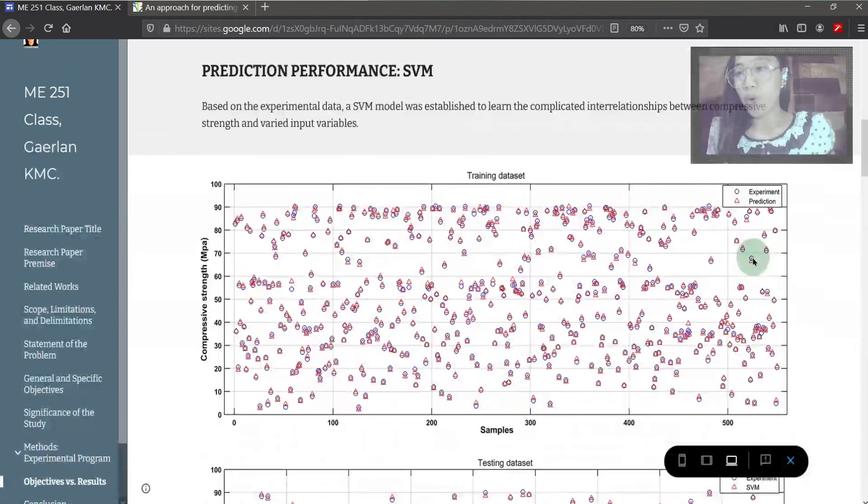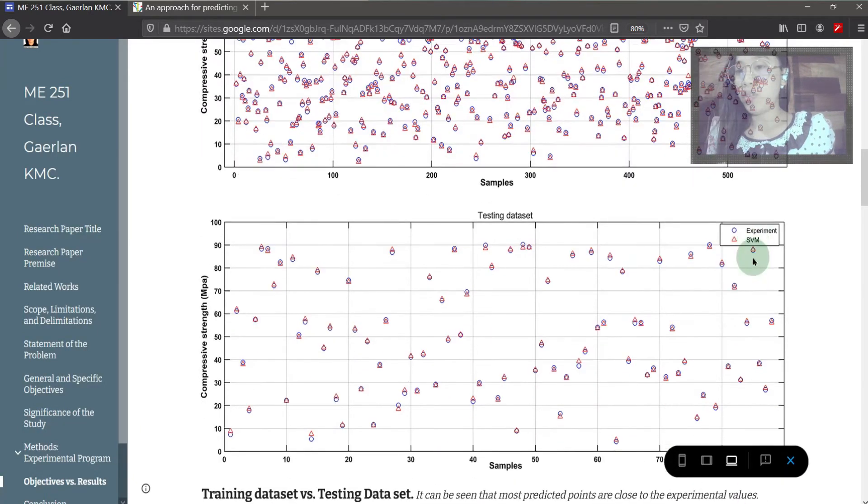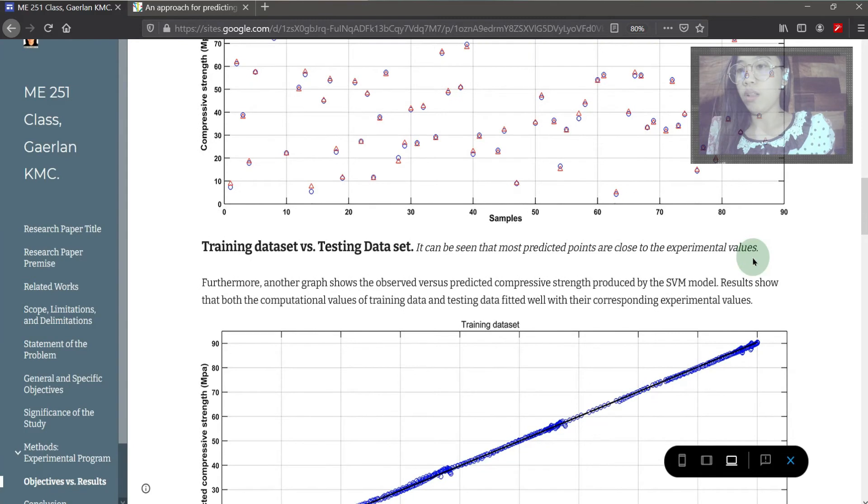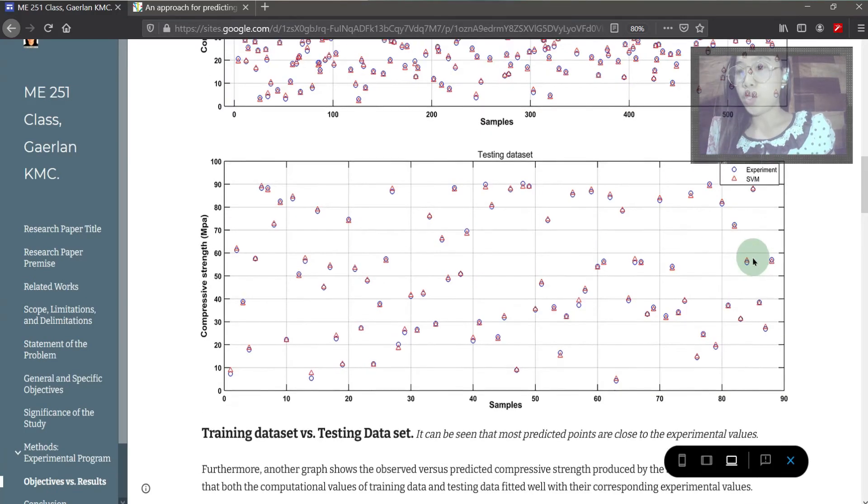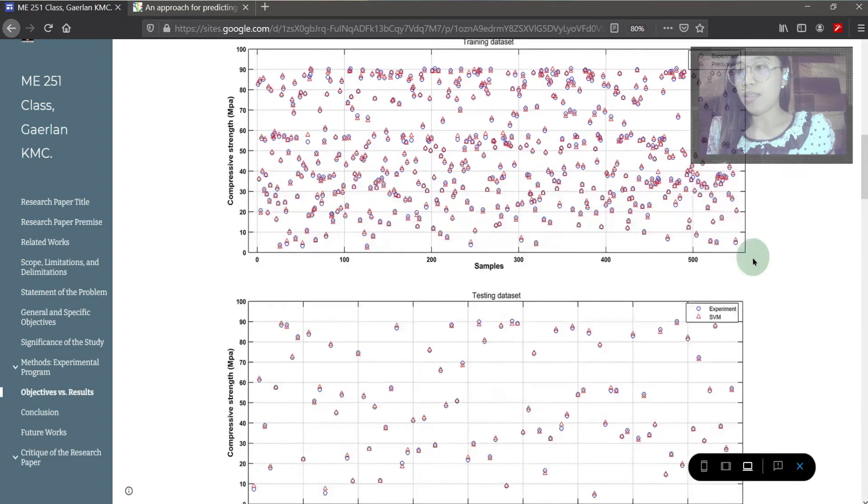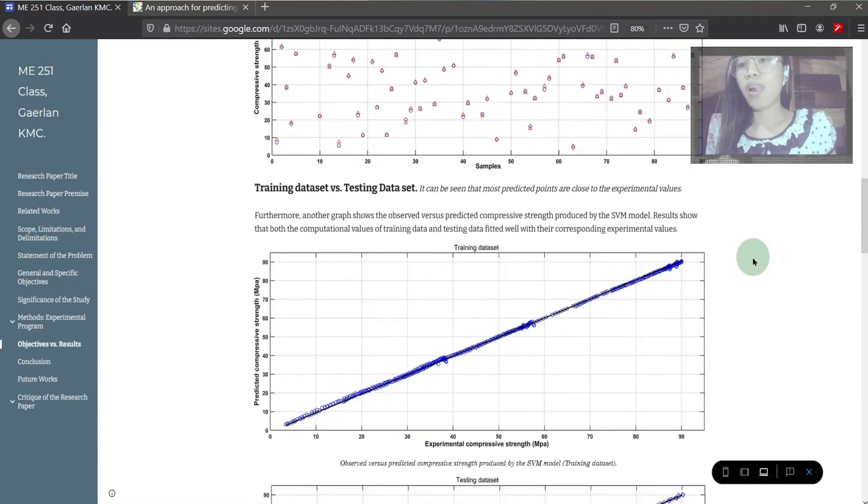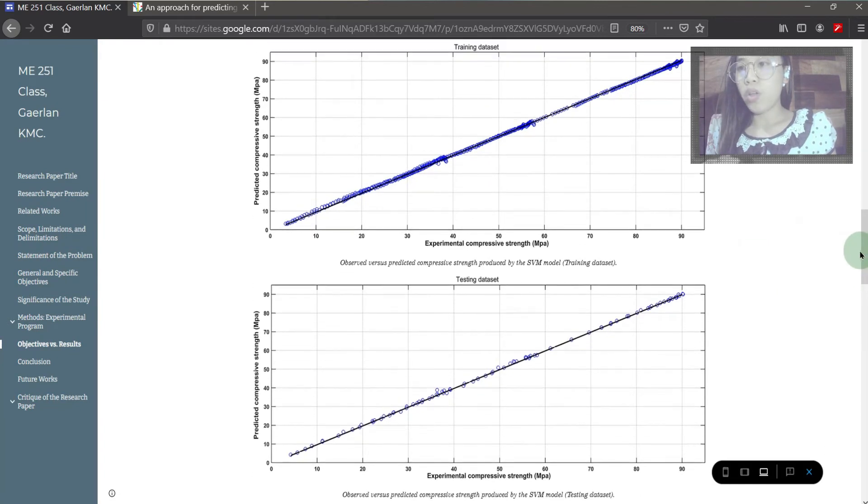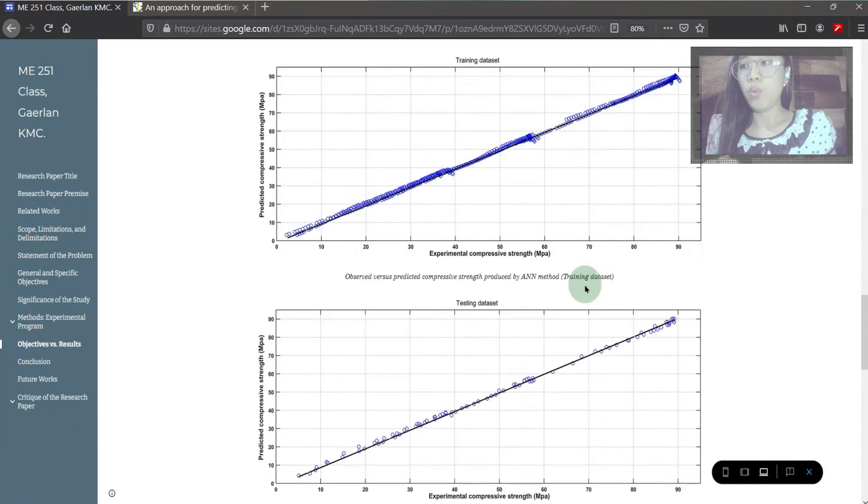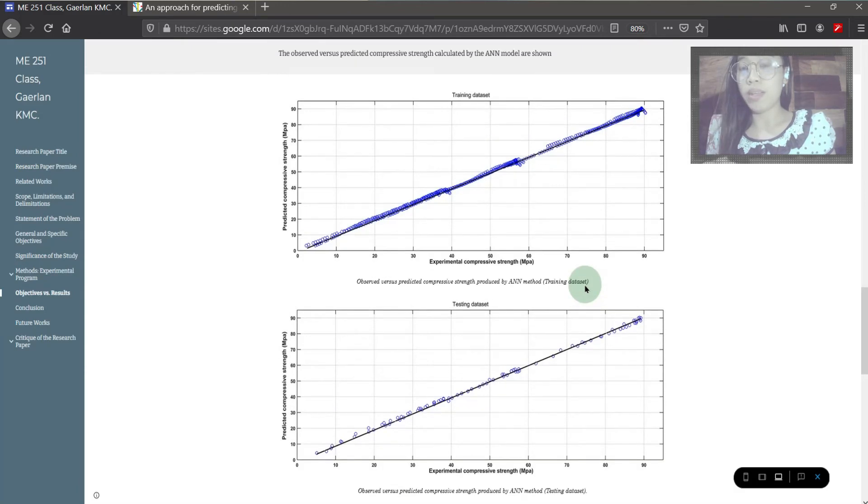Moving to SVM performance, shown here is the graph of separate results for training dataset and testing dataset. It can be seen that most predicted points are close to the experimental values. Another graph also shows that training data and testing data fitted well with experimental values. Comparing this to the graph result for ANN model, it does also have the potential. But to clearly state which method is more predicting, we derived the results through this mathematical criteria.